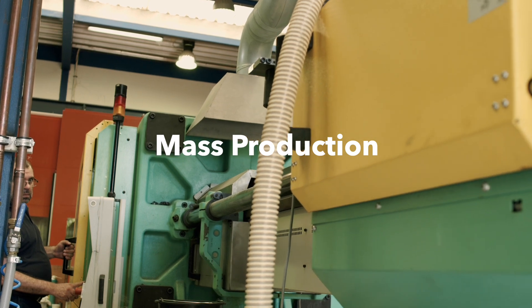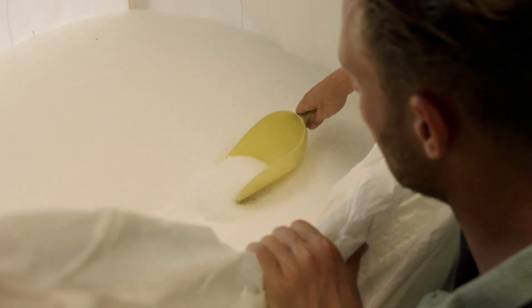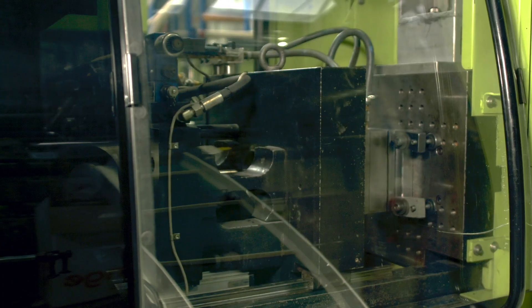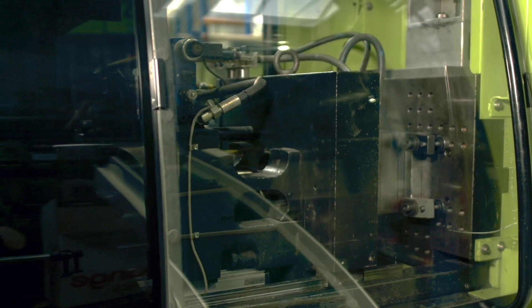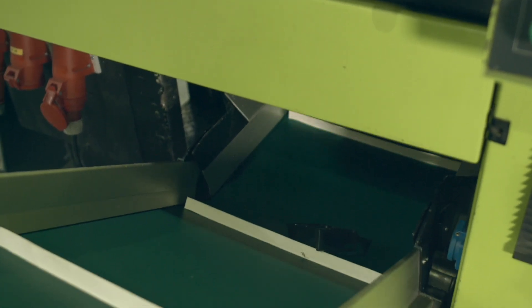The mold is placed into an injection molding machine filled with tiny plastic granules. The machine injects the plastic into the mold cavity at high pressure. The plastic quickly solidifies, after which the mold is opened to reveal the finished product. All in only a matter of seconds.